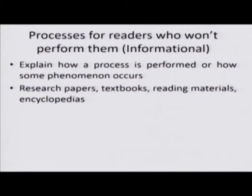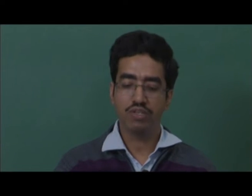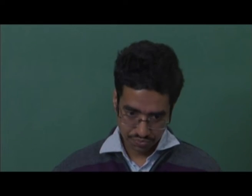The second writing category is informational process analysis. Here you are writing about a process but you do not expect your reader to perform it — it is mainly for the purposes of understanding that specific process. You explain how a process is performed or how some phenomenon occurs. It is usually found in research papers, textbooks, encyclopedias, and research reports. The Uttarakhand disaster example we saw earlier is an example of informational process analysis. In contrast to directional, you will not find polite commands; instead, an unidentified performer is referred to, and you are essentially explaining the process.